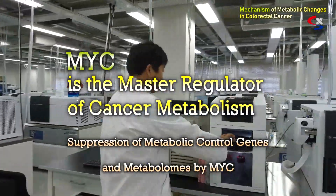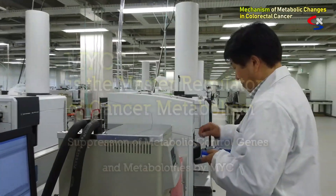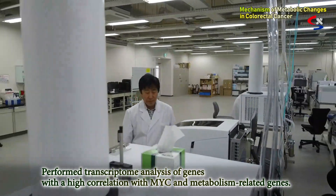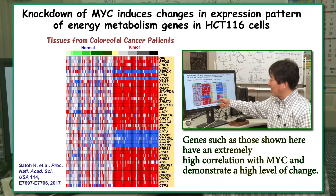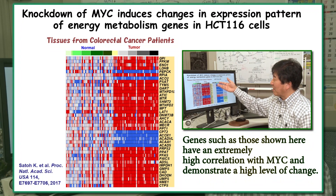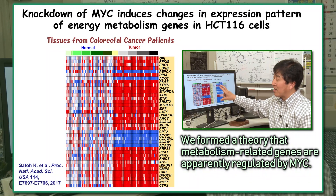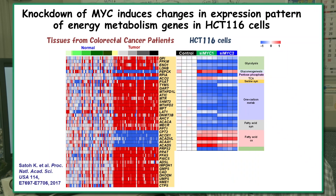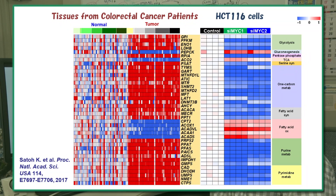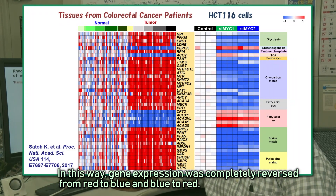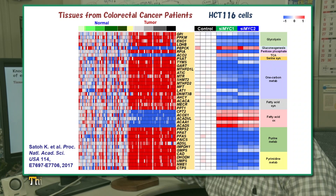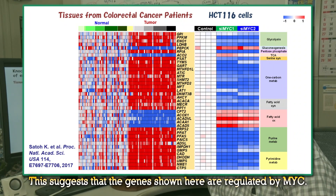MYC is the master regulator of cancer metabolism. We performed transcriptome analysis of genes with a high correlation with MYC and metabolism-related genes. We learned that genes such as those shown here have an extremely high correlation with MYC and demonstrate a high level of change. We formed a theory that metabolism-related genes are apparently regulated by MYC. To prove this theory, we used colorectal cancer cell lines and knocked down MYC genes using two types of siRNA. When MYC is knocked down, gene expression was completely reversed from red to blue and blue to red, suggesting that the genes shown here are regulated by MYC.